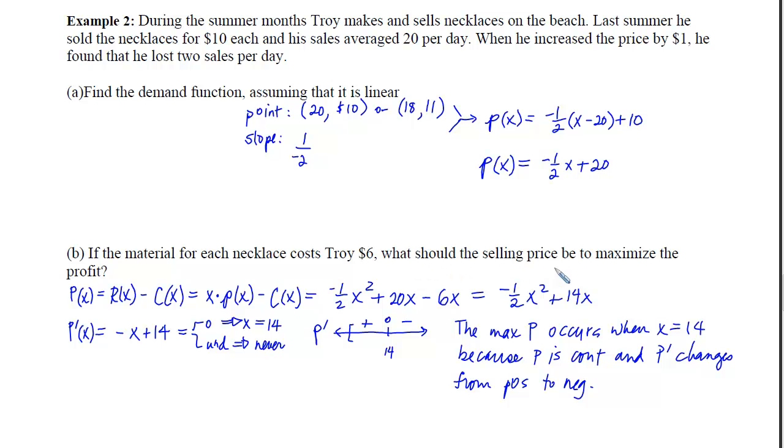And now I've got to answer the question. The question is, what should the selling price be? So I'm going to take this 14 necklaces and plug it into the price function, and figure out that p of 14 is a negative 7 plus 20, which is $13. So we could say Troy should charge $13 per necklace. So now I would like you to figure out what were the steps that we followed in solving both of these problems. What was the process? How did we go about it?